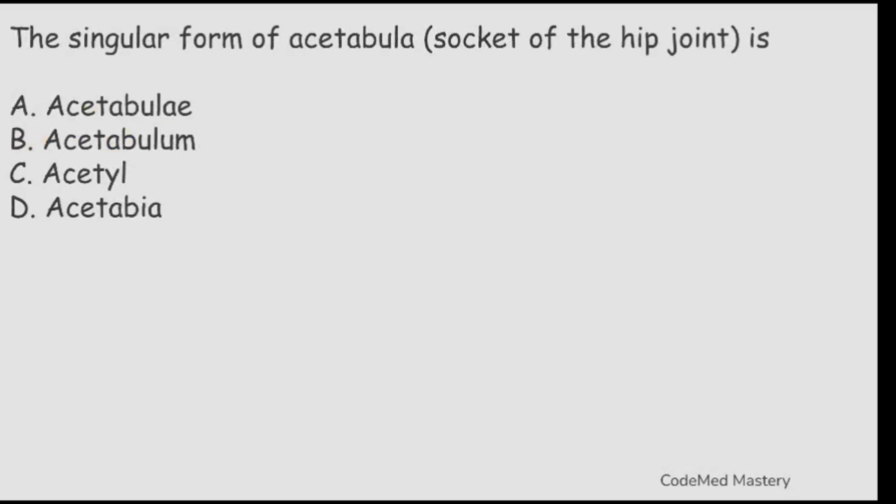Next question: the singular form of acetabula, the socket of the hip joint, is: option A: acetabula. Option B: acetabulum. Option C: acetile. Option D: acetabula. The right answer is option B, acetabulum.